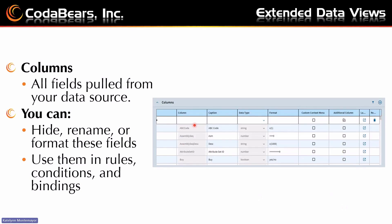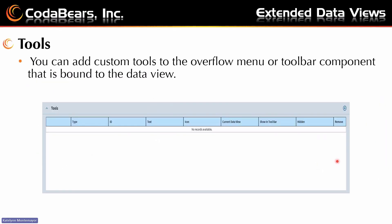This is what it looks like when you pull in that data from your data source — it'll automatically have the column names and captions and everything ready for you, but you can add more if you want. At the very bottom underneath the columns, you have a Tools section where you're able to add custom tools to the overflow menu or the toolbar component that is bound to your data view.